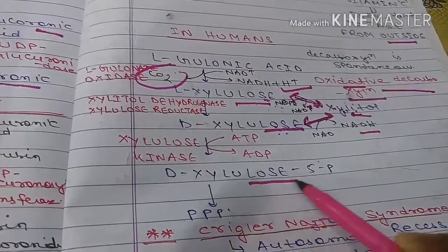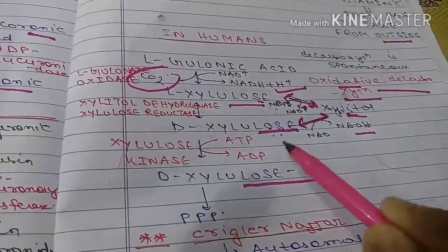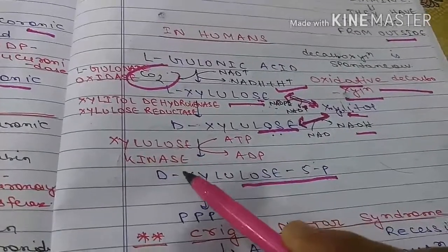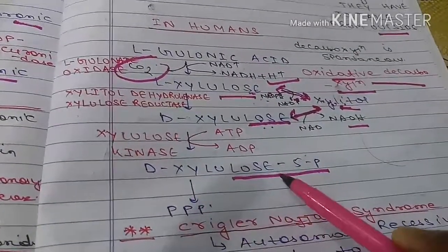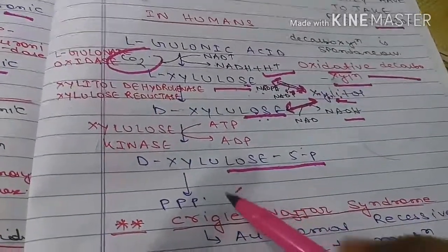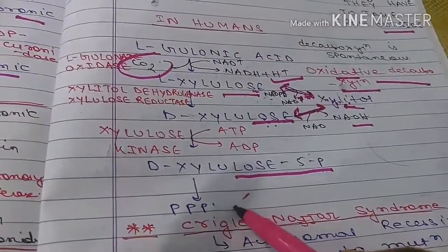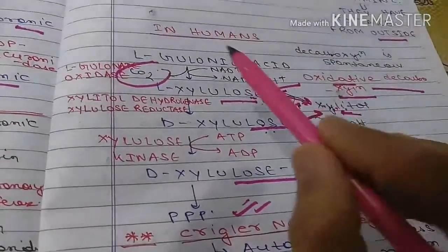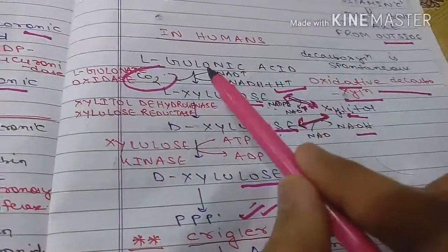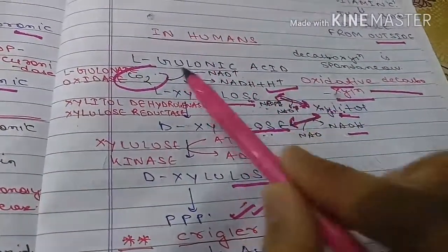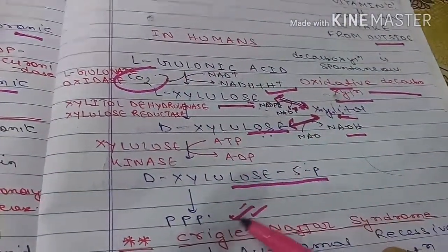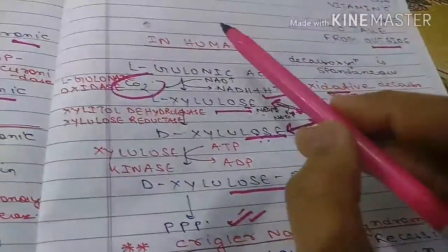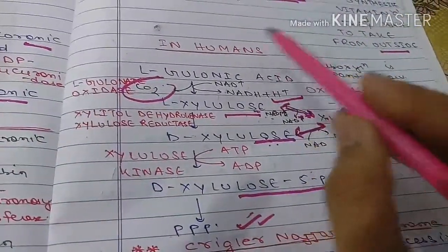Xylitol is then converted to D-xylulose-5-phosphate. ATP is utilized and the enzyme is xylulose kinase. D-xylulose-5-phosphate then enters the pentose phosphate pathway. So in humans, the glucuronic acid pathway feeds into the pentose phosphate pathway via xylitol, while in lower animals or plants it leads to ascorbic acid.